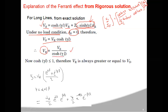From the equation VR = VS / cosh(γL), if you observe the denominator — the term cosh(γL) — its value will be between 0 and 1, meaning cosh is always less than or equal to 1. So when the denominator is less than 1, the total value VR will be greater than VS. From this equation, you can say that VR is greater than VS.